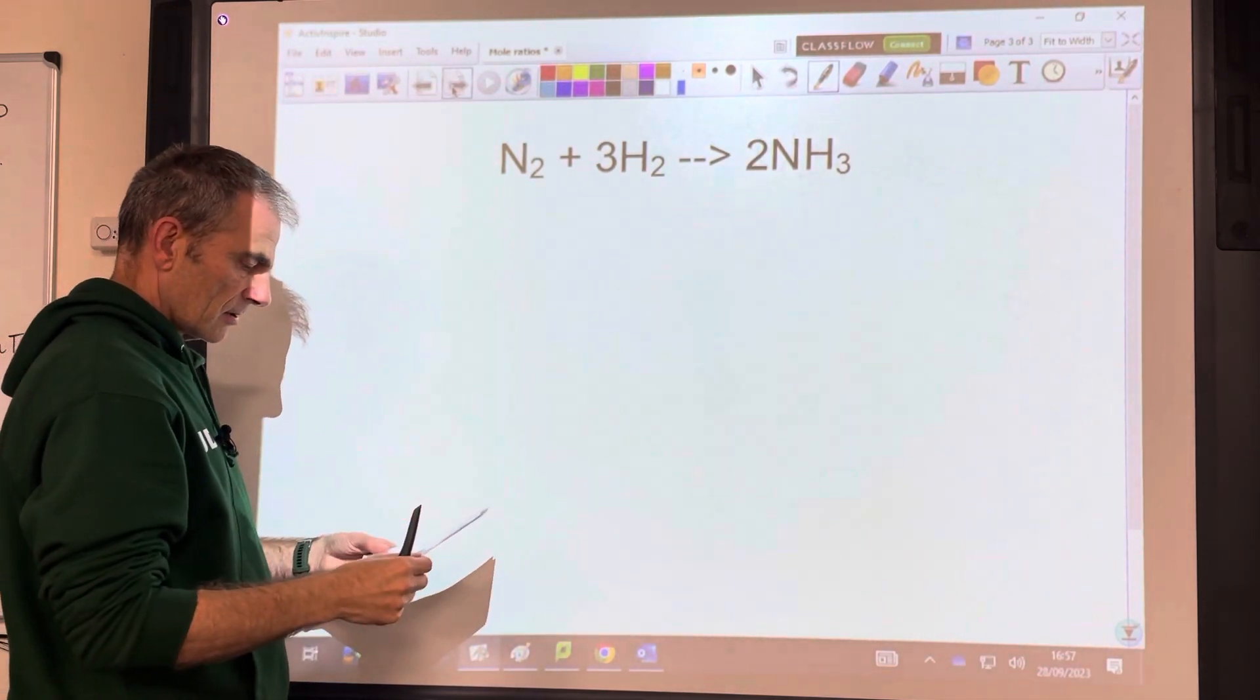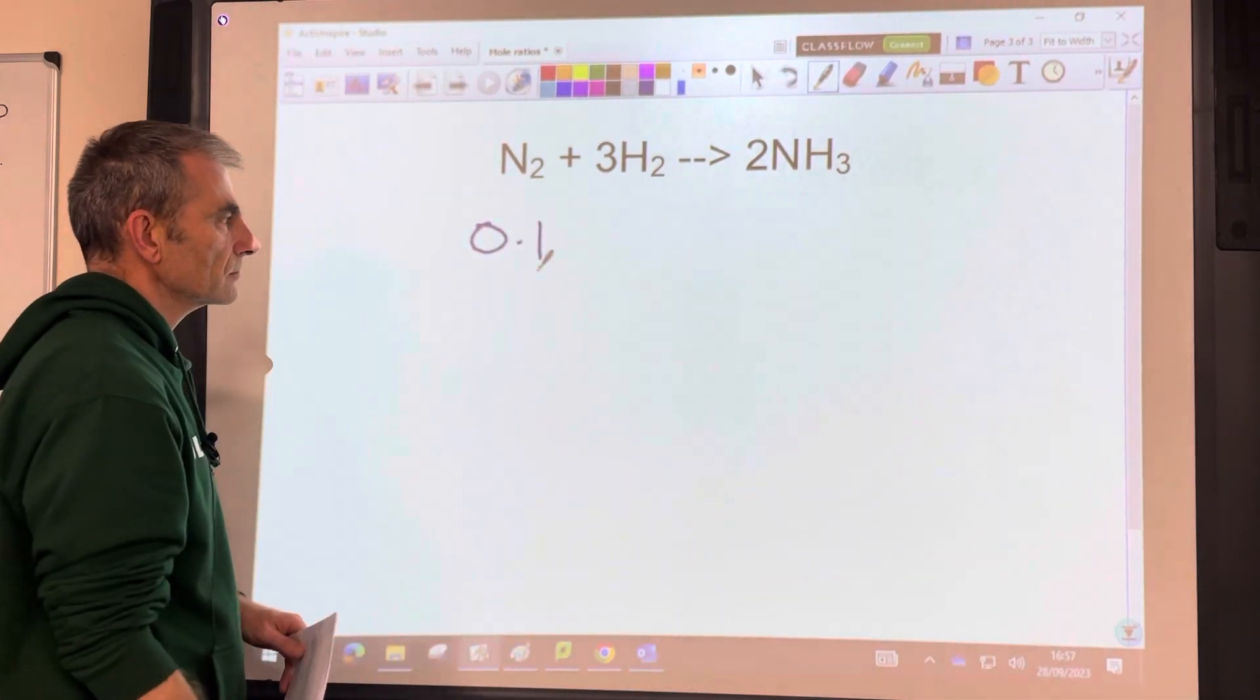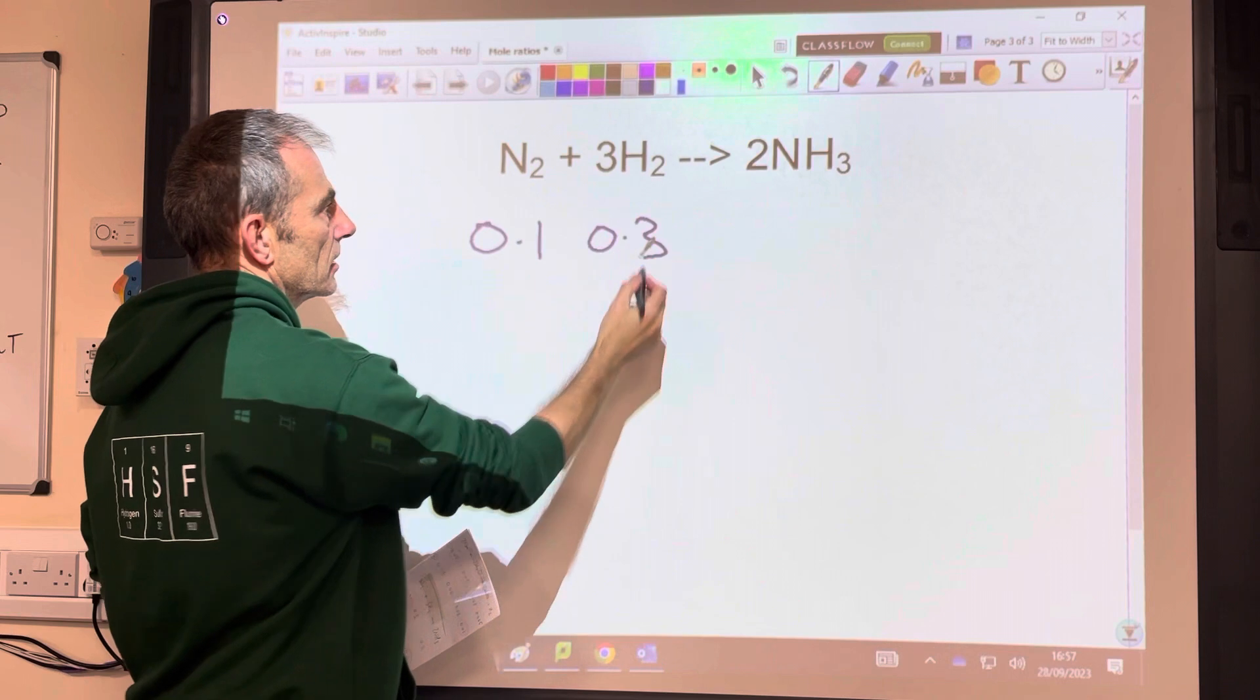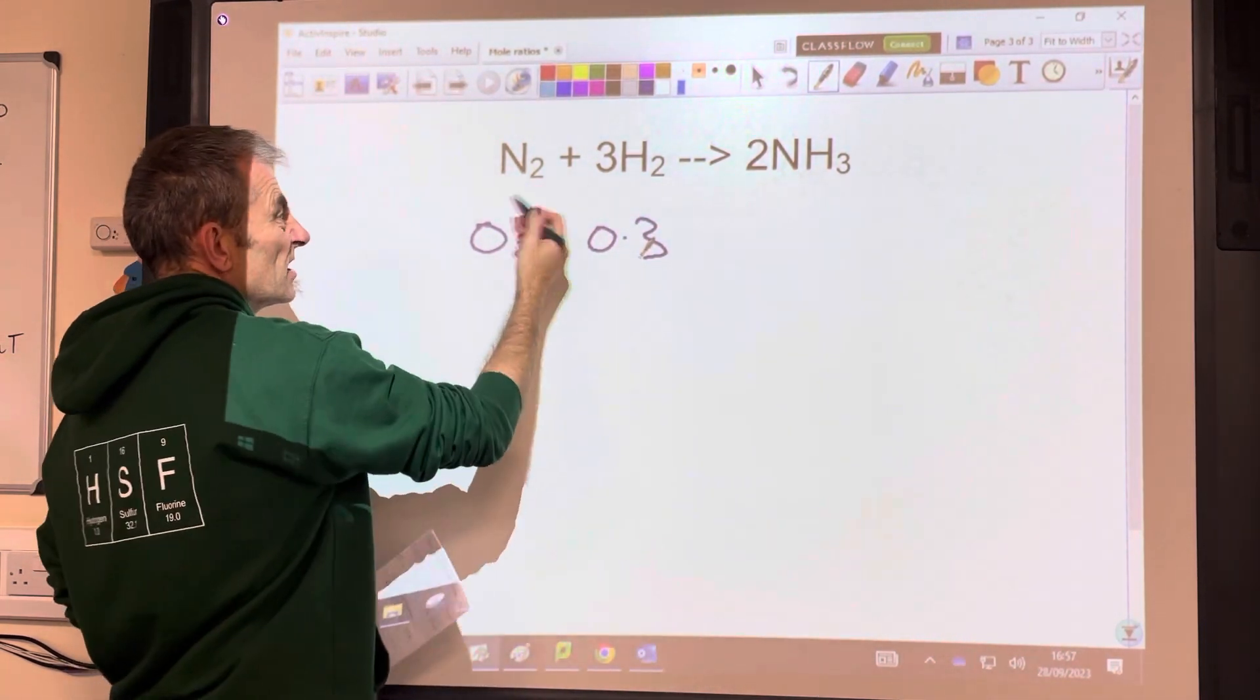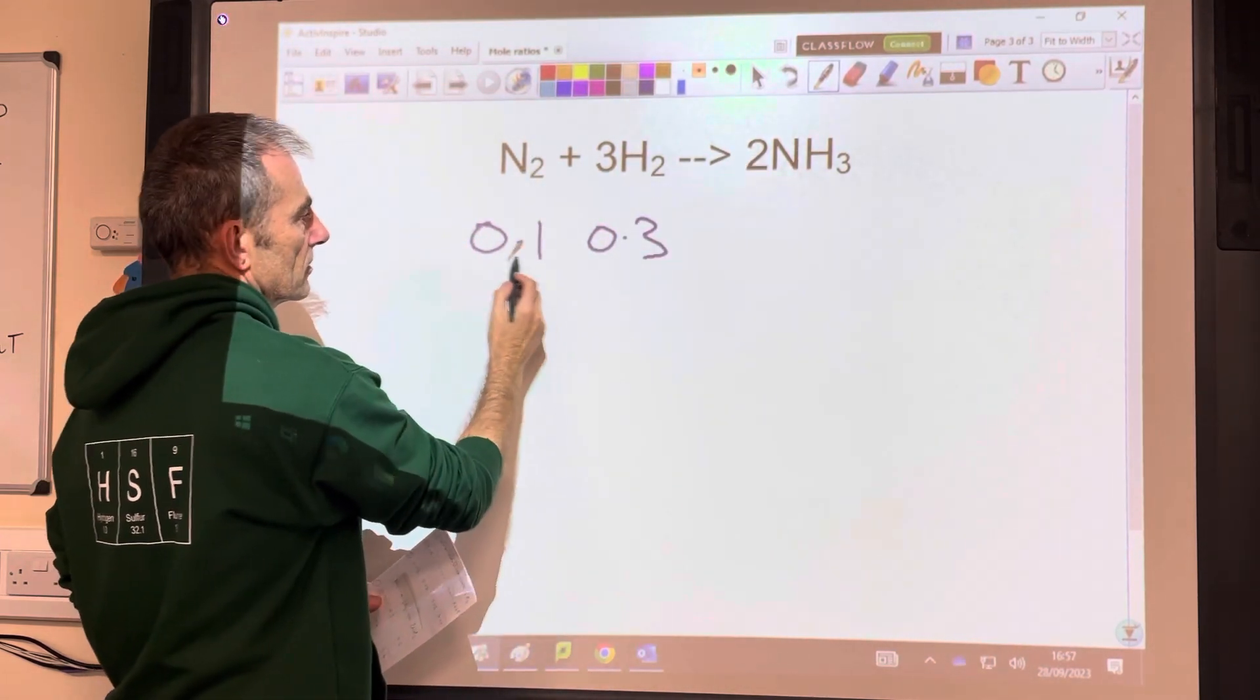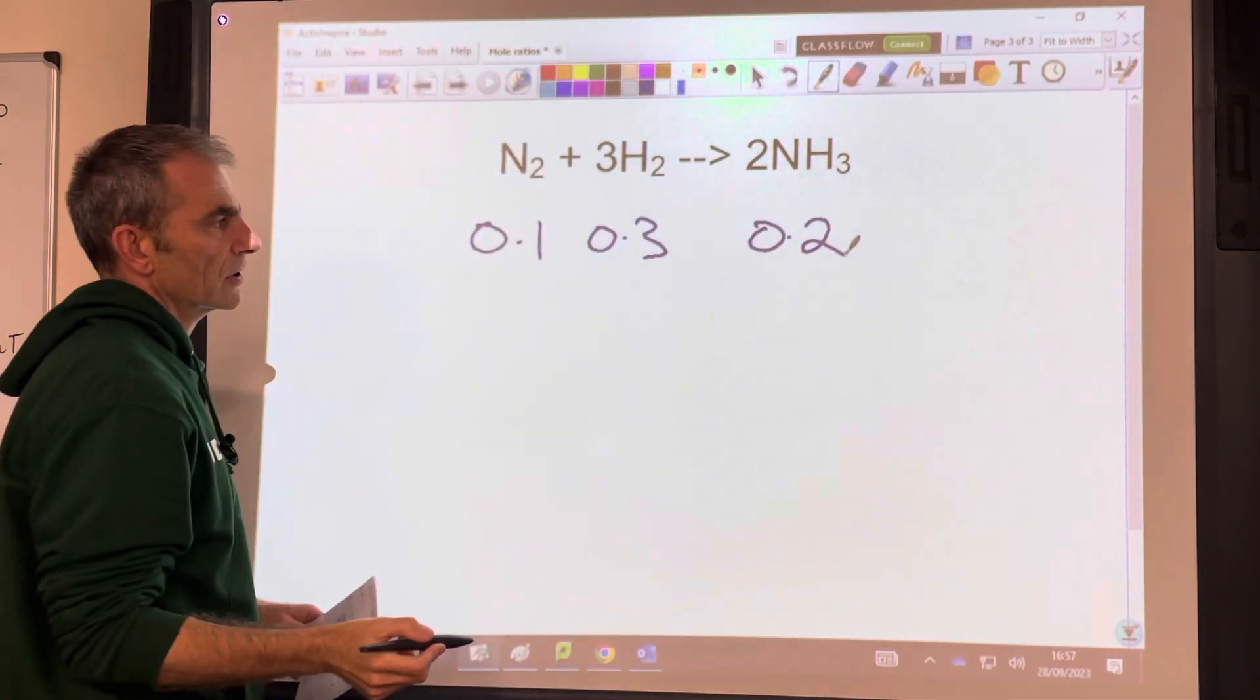So let's start and say, right, we've got 0.1 moles of that. How many moles of hydrogen do we need? We're going to need 3 times as many, because that's a 1 to 3 ratio. So that's going to be 0.3. How many moles of ammonia can we make? Well, the easiest way to do it is on this ratio, this one here. So that's 1 to 2. So that would make double 0.2.